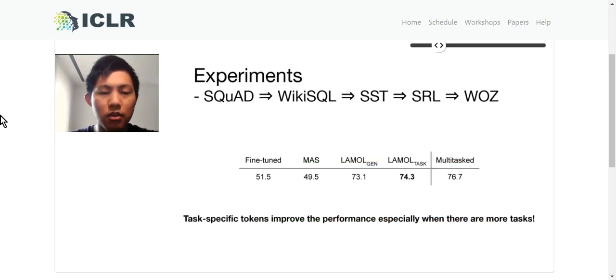In this experiment, we use SQuAD, WikiSQL, SST, SRL, and WOZ and train the models in this order. We can see that adding task-specific tokens help with the performance, especially when there are more tasks. Also, our performance is again quite close to that of multi-task.